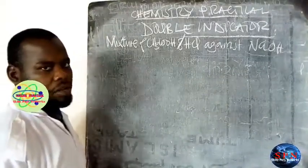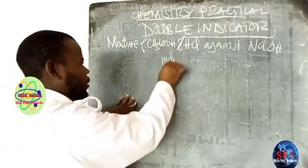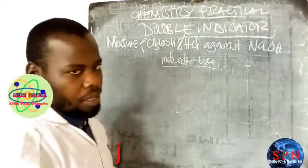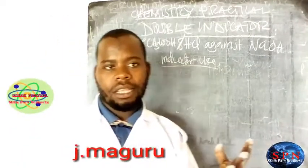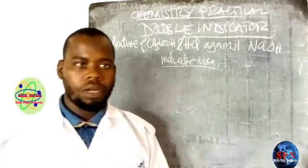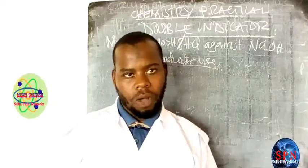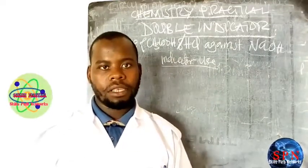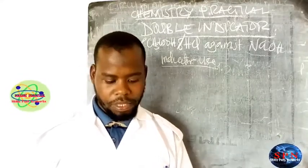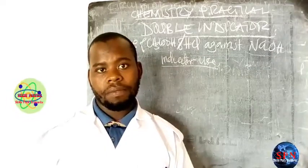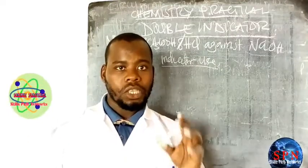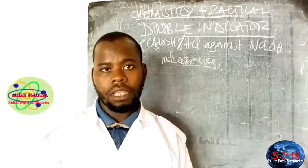You need to decide which indicator to start with. In the previous session we used phenolphthalein indicator, but for this practical we are going to start with methyl orange. We use methyl orange first because it supports the weak acid — methyl orange is itself a weak acid.